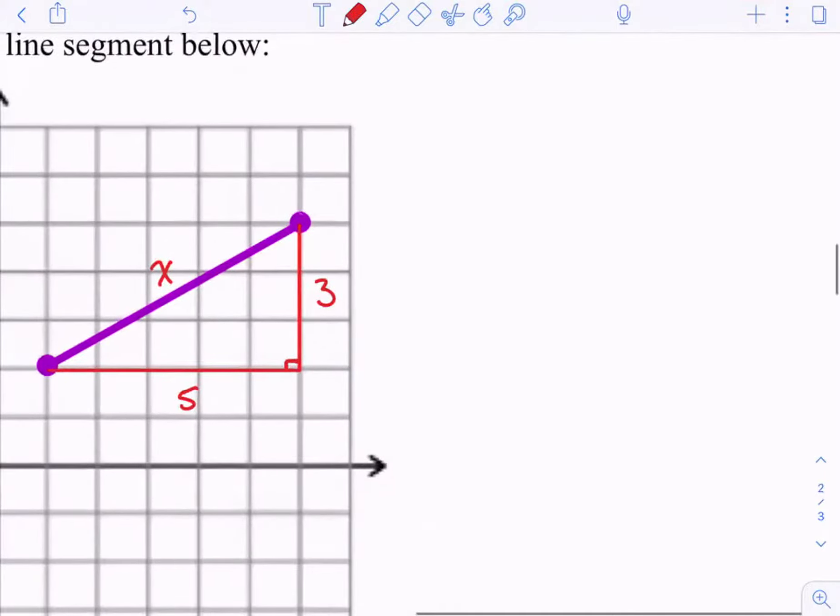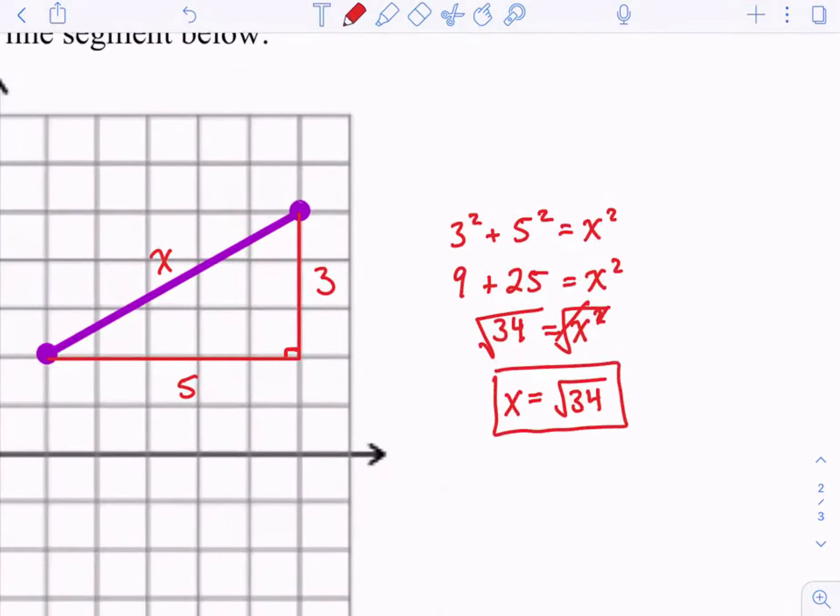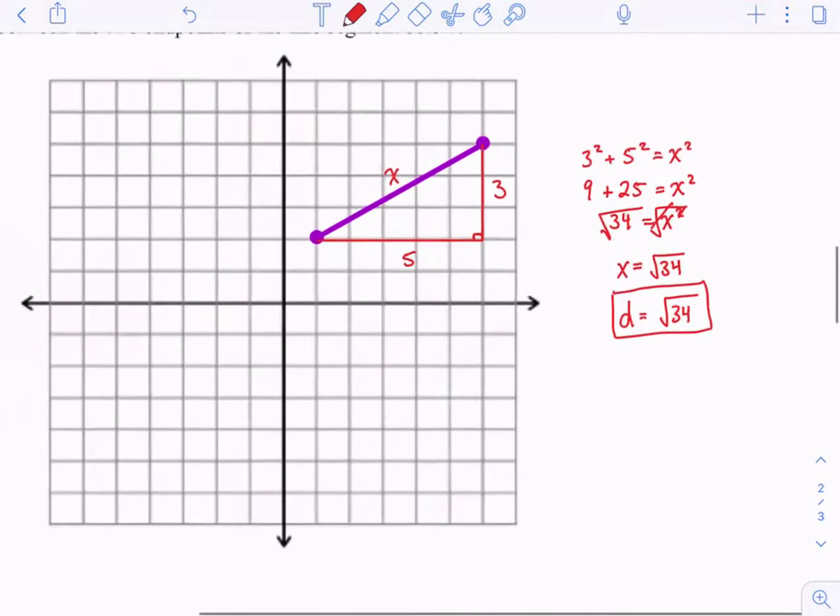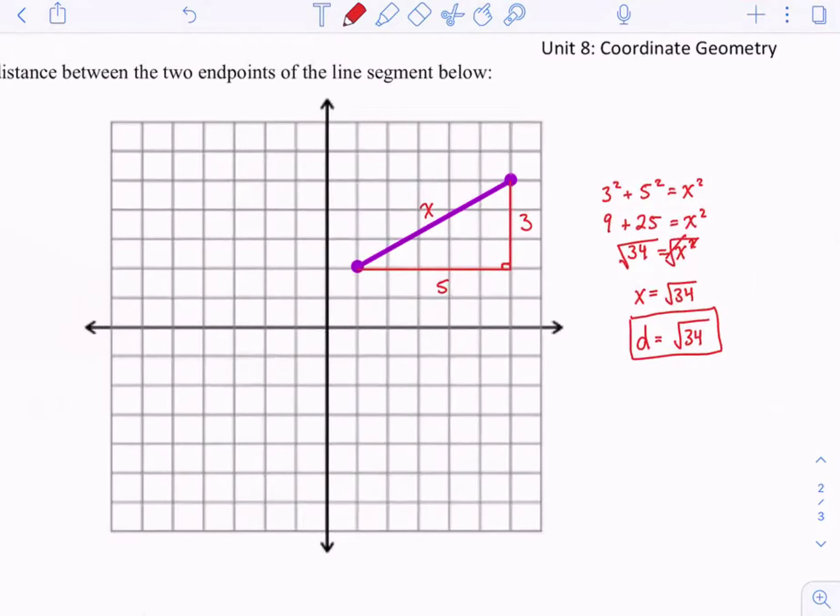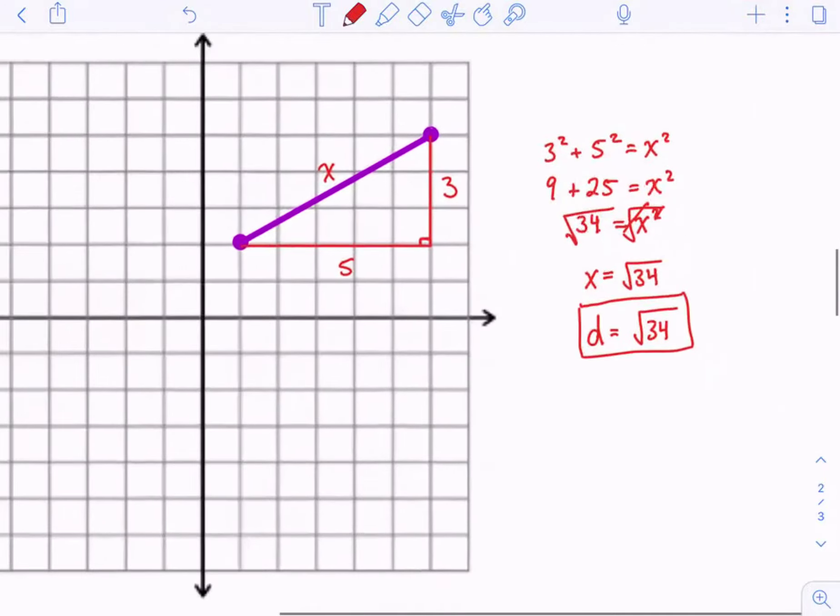Absolutely. I could do the Pythagorean theorem. Three squared plus five squared equals x squared. Nine plus 25 equals x squared. So nine plus 25 is 34. So then I square root. So x equals, well, there is no square root of 34. So I'm just going to leave it the square root of 34. So instead of x, though, actually, I'm going to say, okay, the distance is the square root of 34. Notice how I can easily do the Pythagorean theorem. So really, the distance formula comes from the Pythagorean theorem.